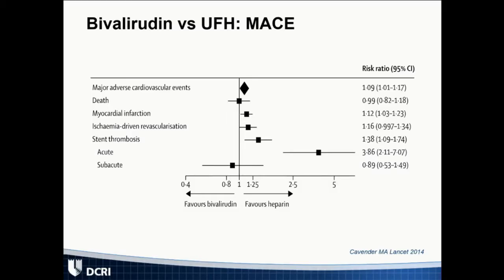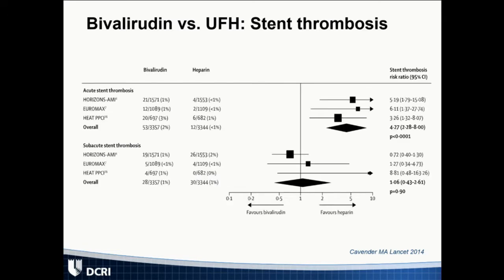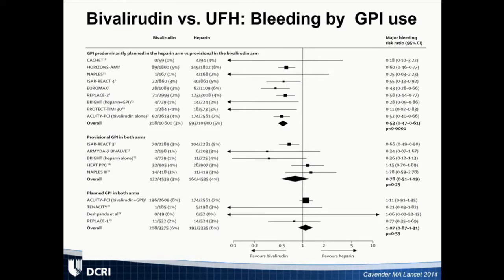Now, bivalirudin versus unfractionated heparin. There have been many studies and debates on this. A meta-analysis by Matt Cavender, now at UNC, pooling all randomized trials for major adverse cardiac events shows that, overall, the data actually favor unfractionated heparin over bivalirudin — which is surprising. Much of this is driven by an increased risk of acute stent thrombosis with bivalirudin, mostly within the first 24 hours; subacute stent thrombosis rates were not different. If you plan to use a 2B3A inhibitor, bivalirudin appears safer — you have two antithrombotic agents. But without a 2B3A inhibitor, there's no significant bleeding difference, and you still pay the price of potentially increased acute stent thrombosis.